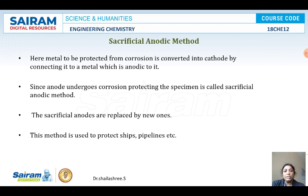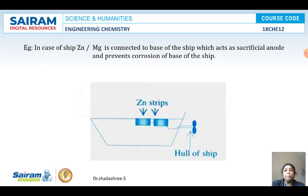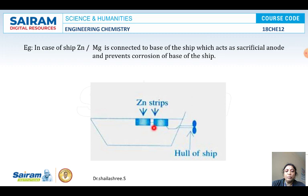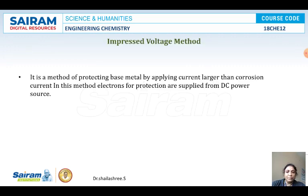This is a diagrammatic representation of the sacrificial anode method. The boat hull is connected with zinc strips, and from time to time these zinc strips should be replaced with new ones to protect the iron base. Now let us move to the second type: the impressed voltage method.